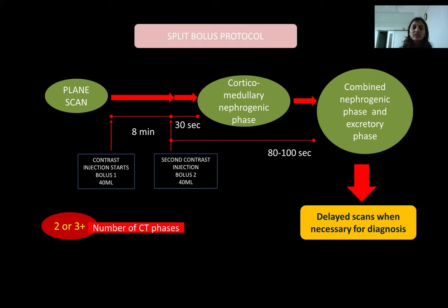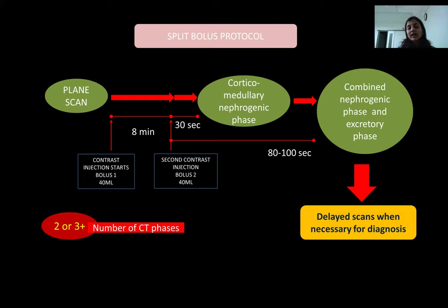This chart represents the split bolus protocol. A plain scan is done, after which a first bolus of 40 ml of contrast is injected. After waiting 8 minutes, a second bolus of contrast is injected. Following the second bolus, corticomedullary and nephrogenic phases are taken at 30 seconds and 100 seconds respectively. However, at the 100-second scan, the nephrogenic and excretory phases are combined, eliminating the need for another scan at 8 minutes. Thus, only a total of 2 or 3 CT phases are required for this method.